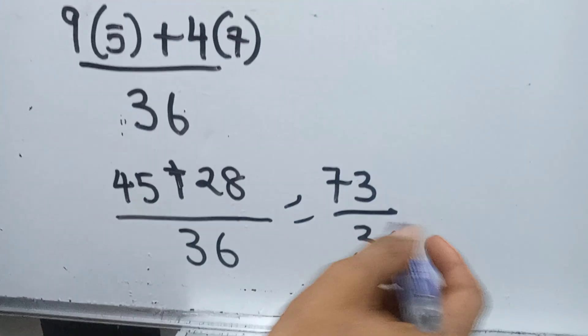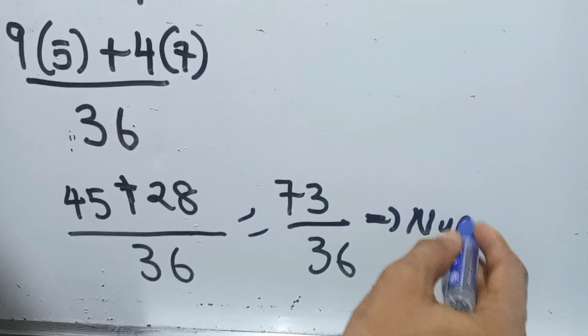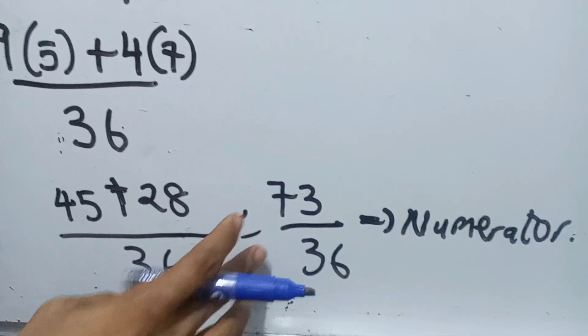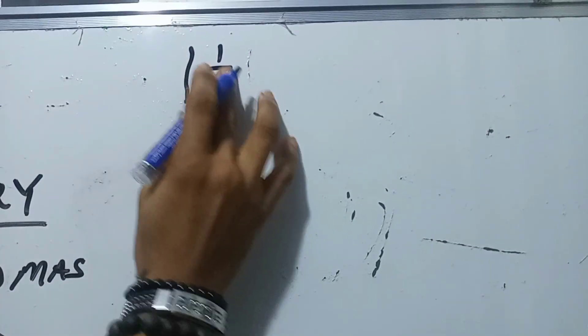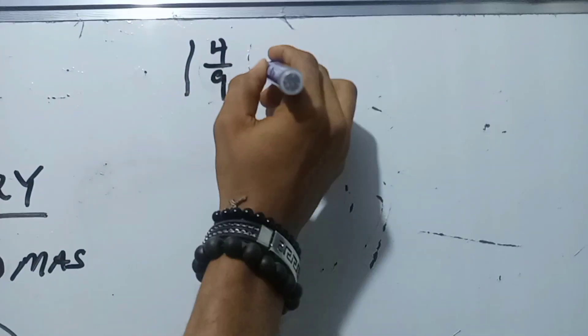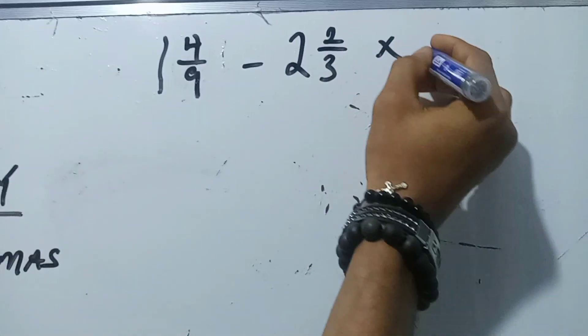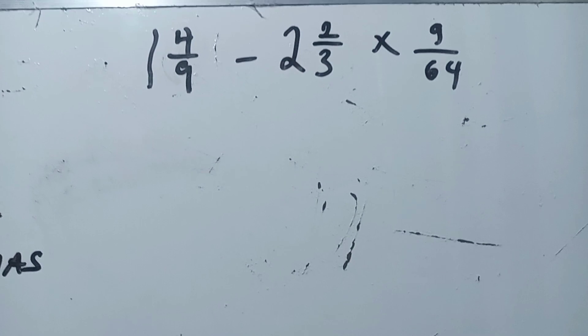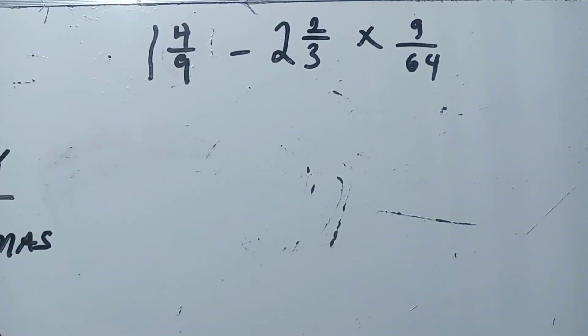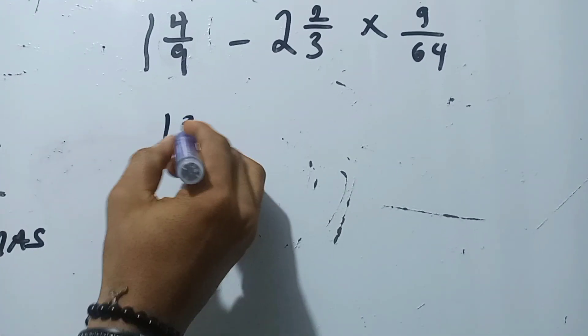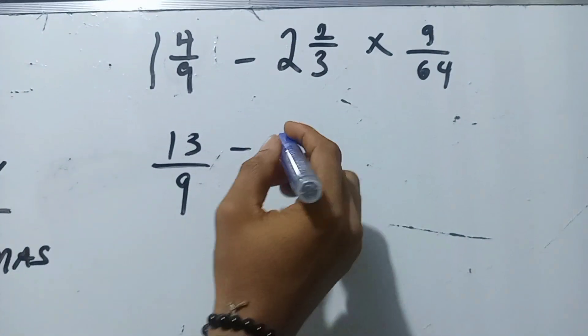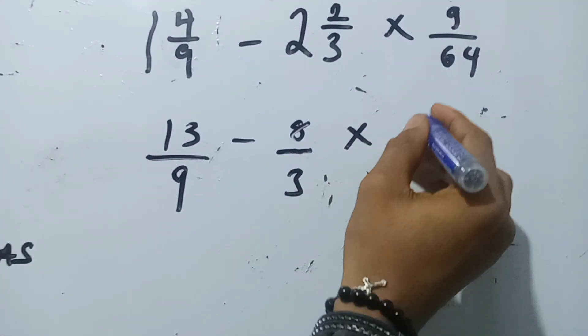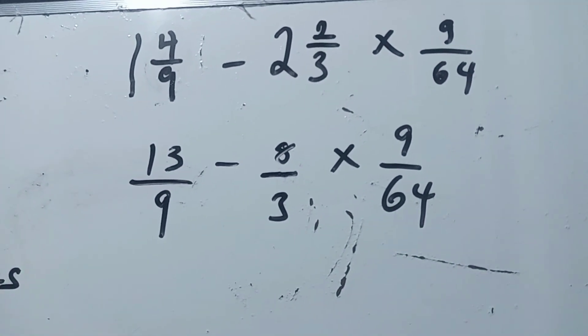Now we go to the denominator. The denominator has 1 and 4 over 9 minus 2 and 2 over 3, multiplied by 9 over 64. I convert the mixed numbers: nine times 1 plus 4 gives 13 over 9, and three times 2 plus 2 gives 8 over 3. We also have 9 over 64. Following the Board Mass principle, I identify the operation order.